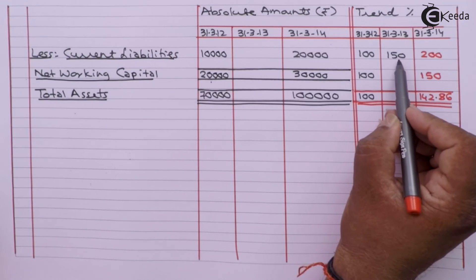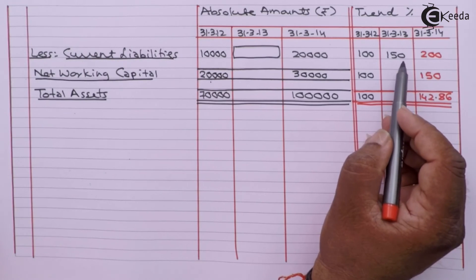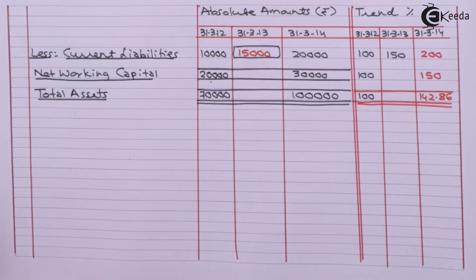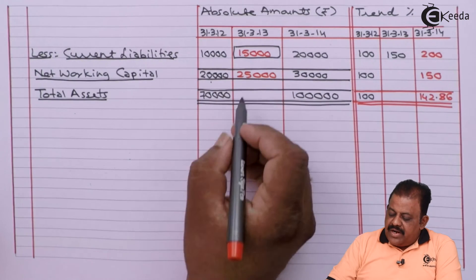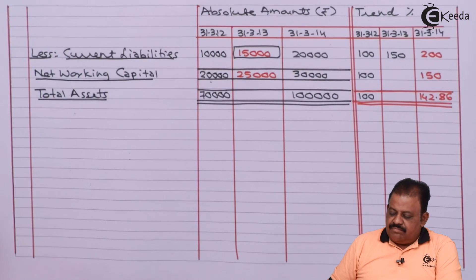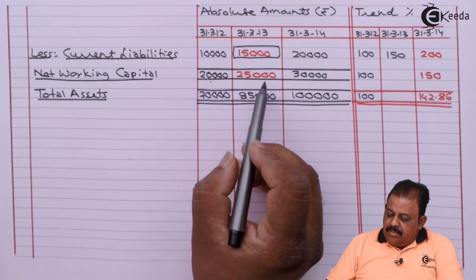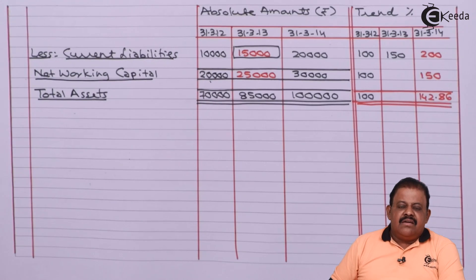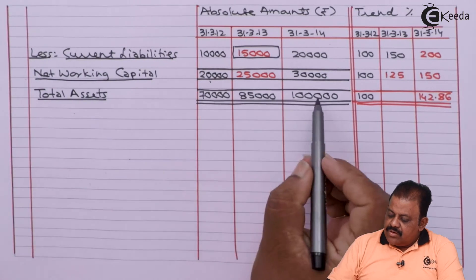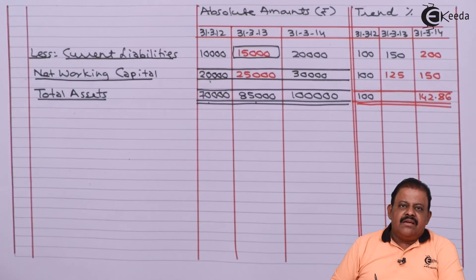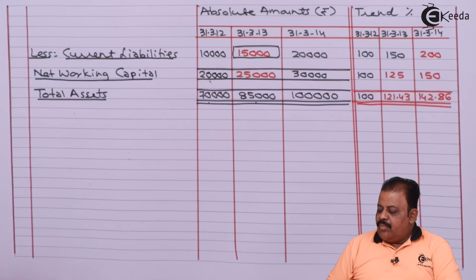Current liability trend is 150, so 10,000 multiplied by 150% equals 15,000. Net working capital: 40,000 minus 15,000 equals 25,000. Trend value for working capital: 25,000 divided by 20,000 multiplied by 100 equals 125. Total assets: 85,000 divided by 70,000 multiplied by 100 equals 121.43%.